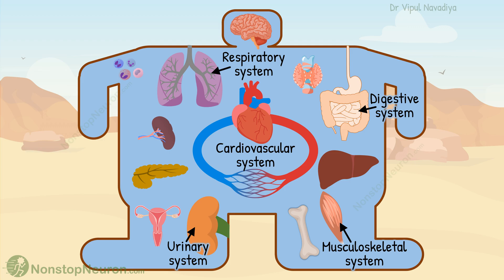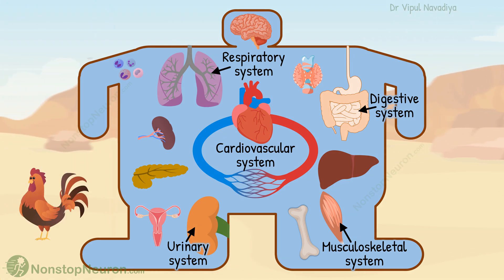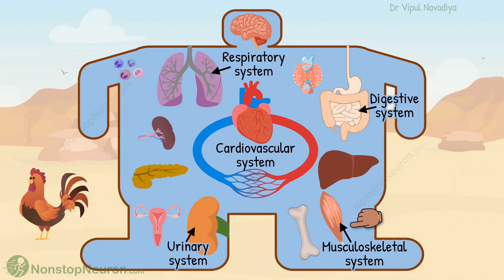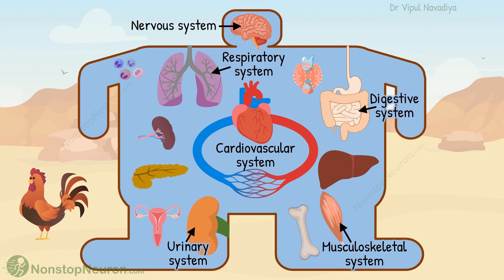Although these systems have specialized in whatever they do, they cannot work independently or haphazardly. Their activity must be coordinated and regulated based on the requirement of the internal as well as external conditions. For example, if a person needs to chase a chicken to get it as food, it will mainly be the duty of the musculoskeletal system. But it cannot do so alone — the respiratory system also needs to work harder to get more oxygen for muscles, and the circulatory system also needs to speed up to deliver nutrients to the muscle. Thus, the activity of different organ systems needs to be coordinated and regulated, and that is the job of the nervous system and endocrine system. They detect changing conditions and regulate the activity of the organs as needed for those changes.